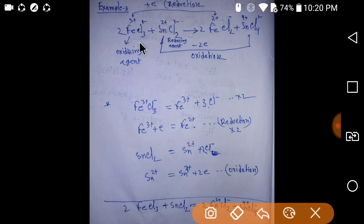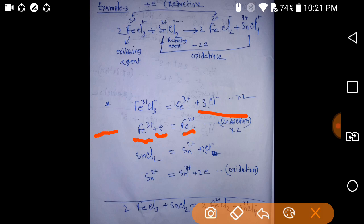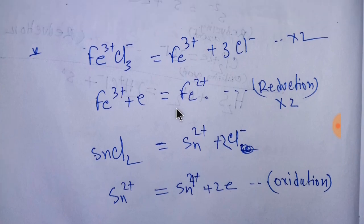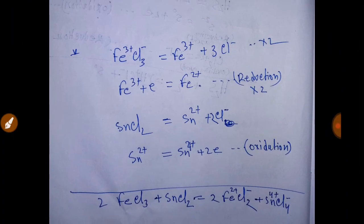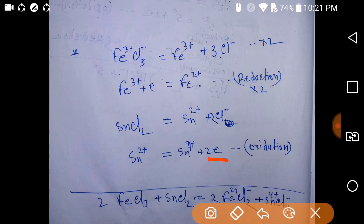We can write ferric chloride as Fe³⁺ plus three chloride. This Fe³⁺ will take one electron and become Fe²⁺. Stannous chloride can be written as Sn²⁺ plus chloride. This tin will release two electrons and become Sn⁴⁺. To balance: tin is releasing two electrons but iron is taking only one electron.